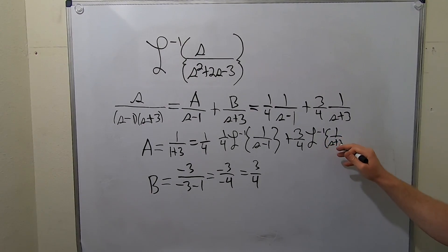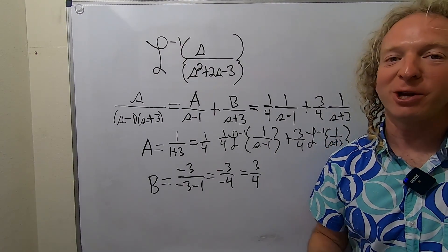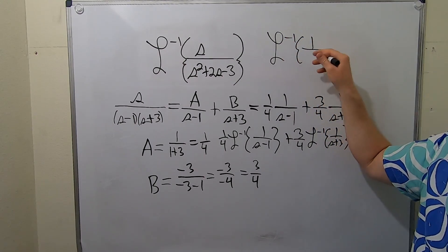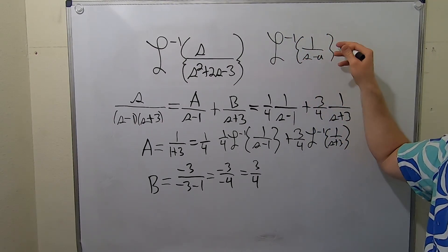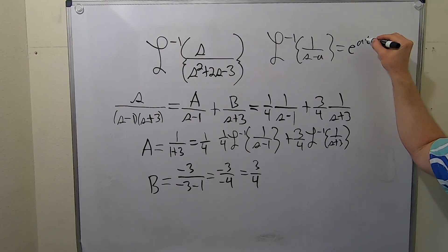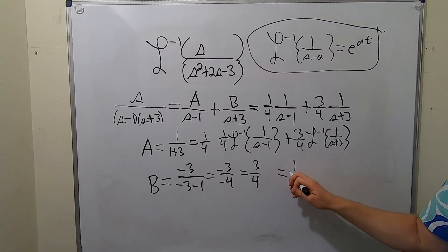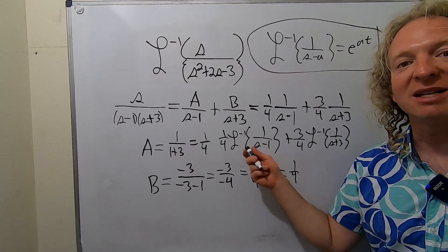Good stuff. This is what it's all about. We can use a super powerful formula, right? The inverse Laplace of 1 over s minus a is equal to e to the at. That's the formula for life. So this is going to be one-fourth e to the t because a is one.